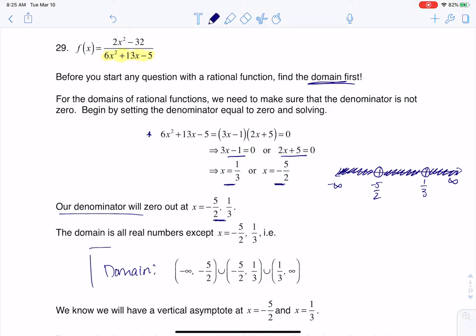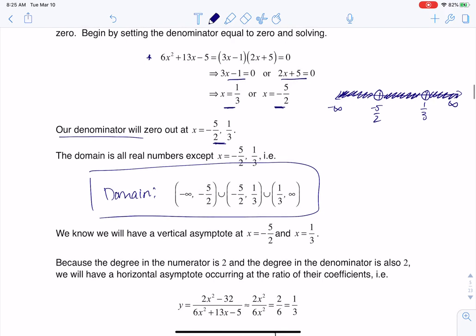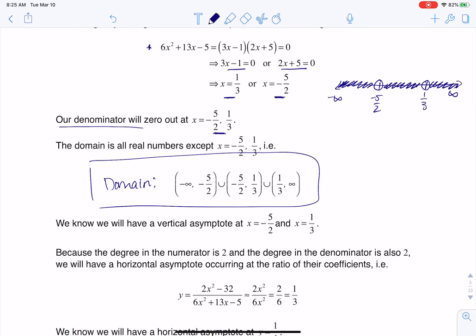Now, that wasn't the question asked of me, but I wanted to get my domain and just remind you that any time you have a place where just your denominator zeroes out, you automatically have vertical asymptotes there.